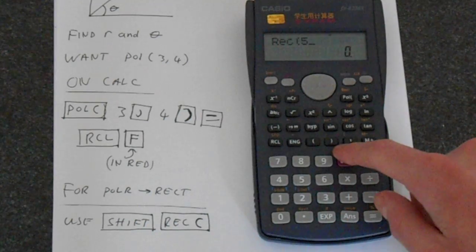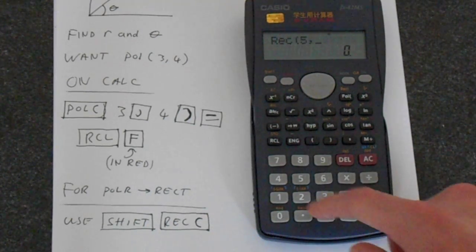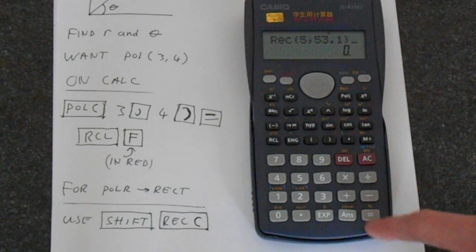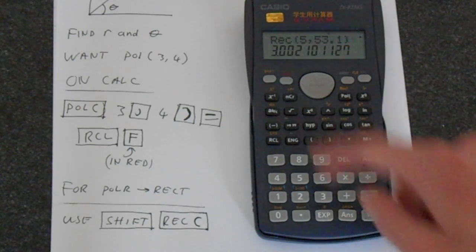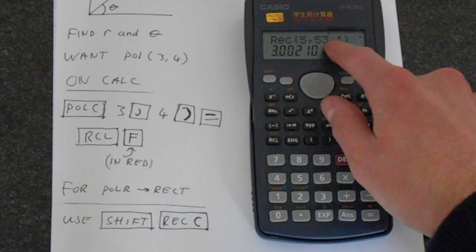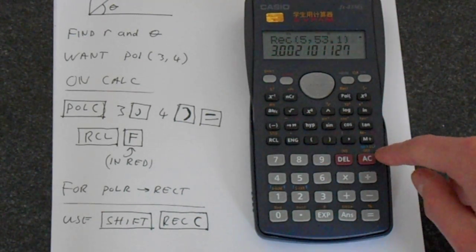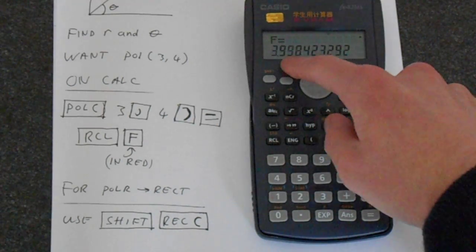5, then put in a comma, and then 53.1, close that, and then if we press equals, it gives us 3 point something, it's the rounding on this 53. And then if we press recall and then F, we get roughly 4.